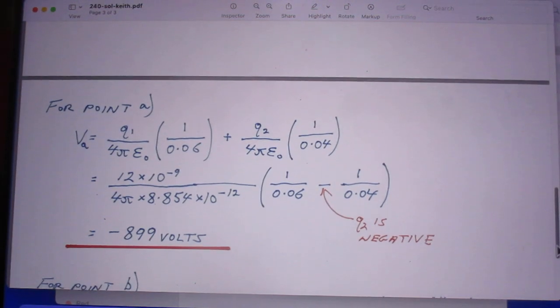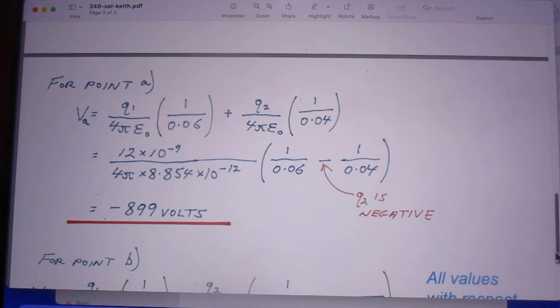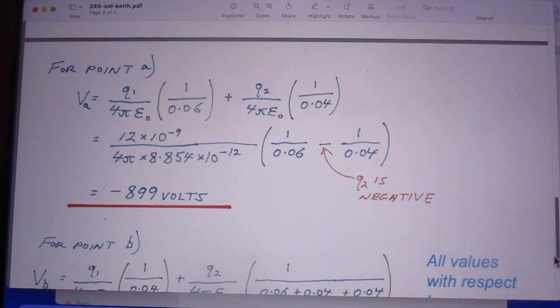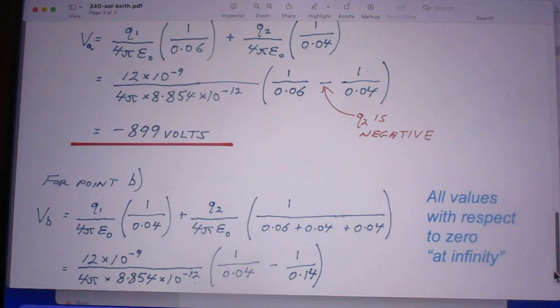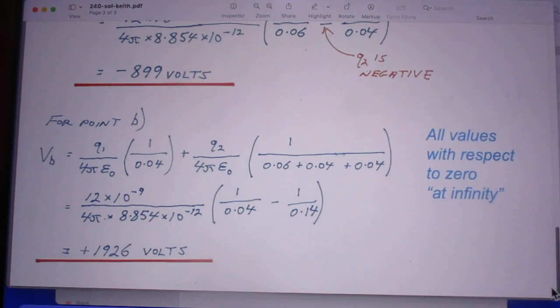Here is point A minus 899 volts, point B plus 1926 volts. I could have done this problem in high school without any doubt. The fact that we cover it of course still in 802 is not unreasonable.